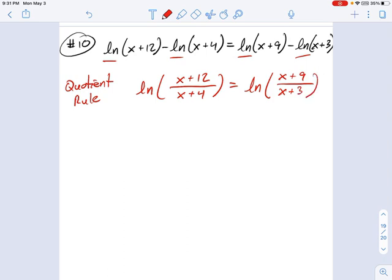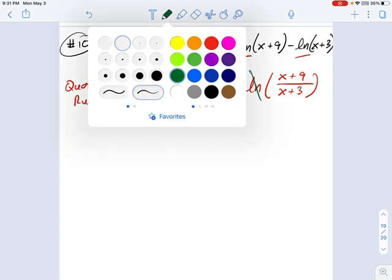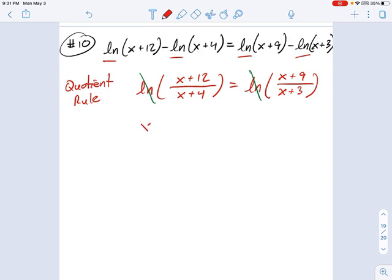Now you have equal logarithms. So you can come along and cross those logs out by exponential equality, and let's see what that gives us. We get x plus 12 over x plus 4 equals x plus 9 over x plus 3. No sweat. It's just a rational equation.